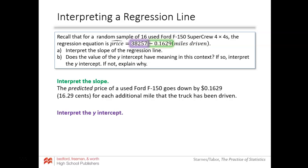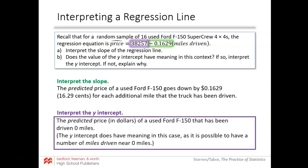The y-intercept in math is where x equals zero. For this problem: the predicted price in dollars of a used Ford F-150 that has been driven zero miles — brand new out of the factory — is what a brand new Ford F-150 should cost. Most of you don't buy brand new cars, but the sticker price of a brand new Ford F-150 SuperCrew 4x4 according to our model is predicted to be $38,257.